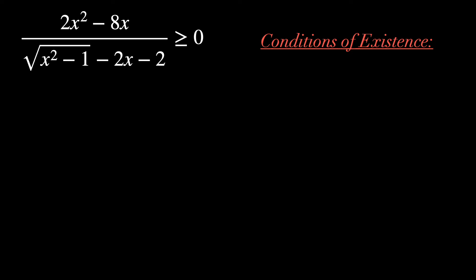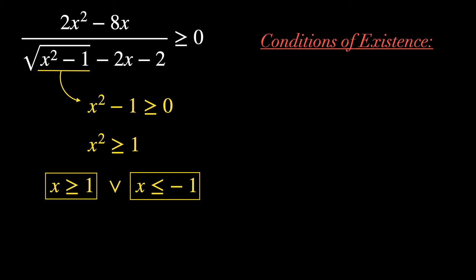First of all, let's study its conditions for existence. There are two of them. The first: x squared minus 1 is greater than or equal to 0, because it's inside the square root. This gives x squared ≥ 1, and thus either x ≥ 1 or x ≤ −1. That's our first condition for x.